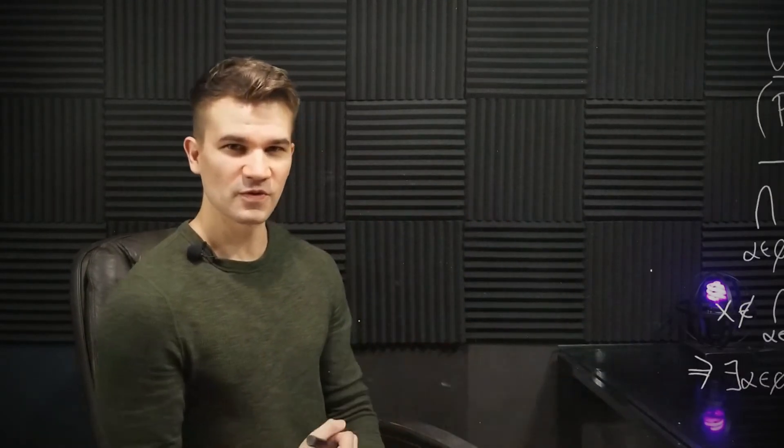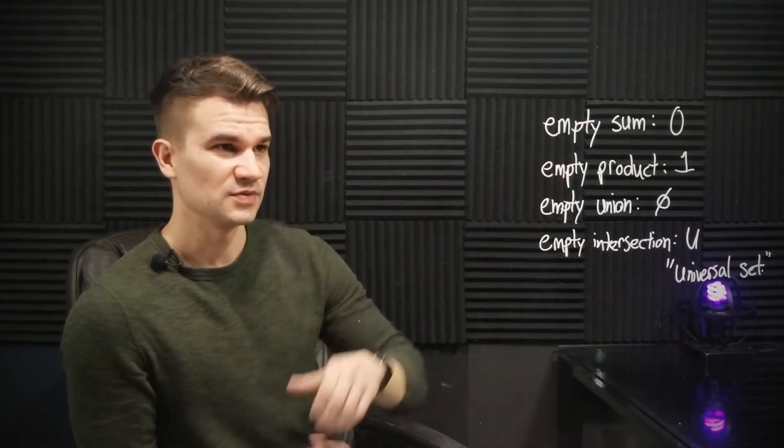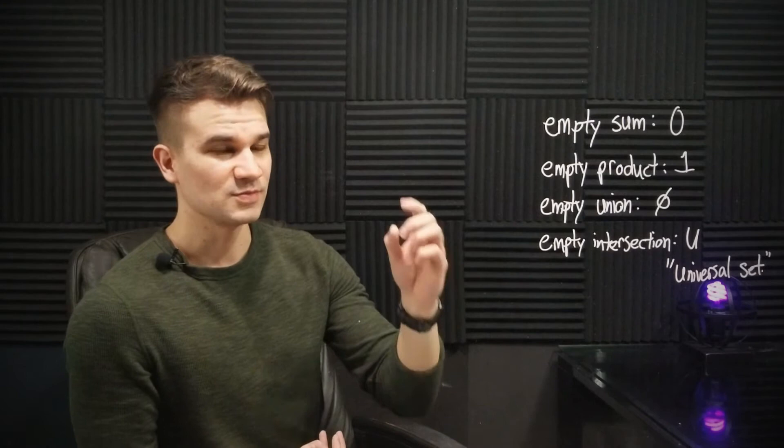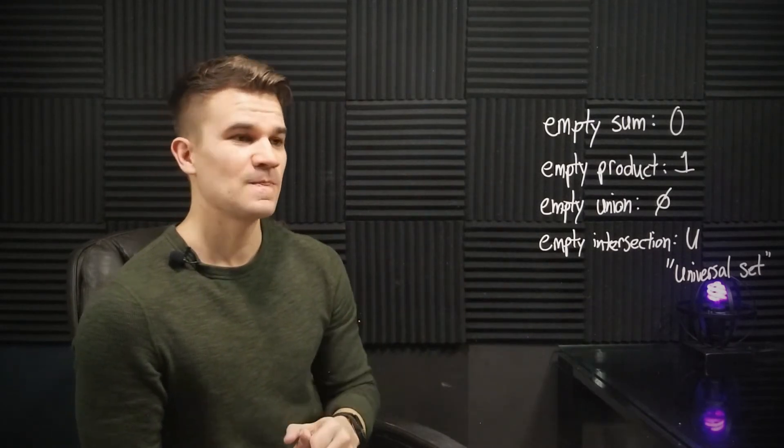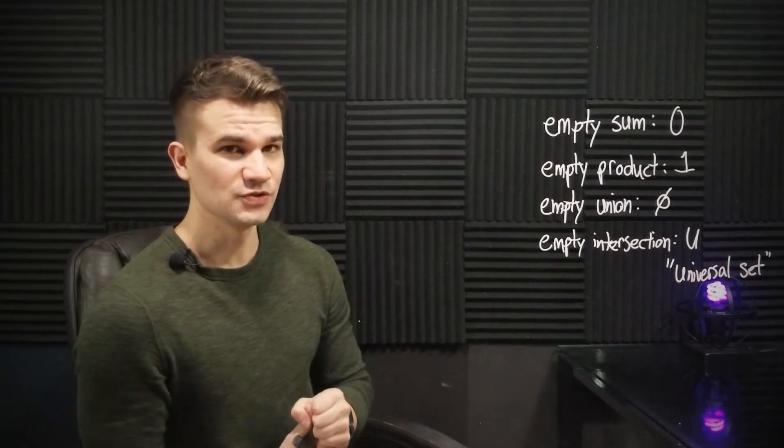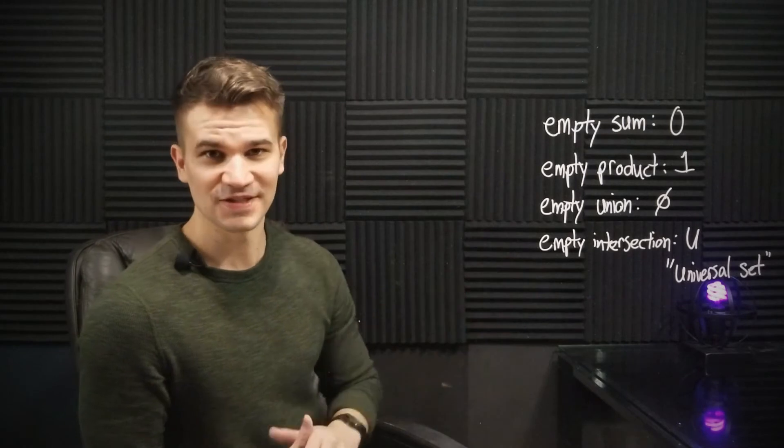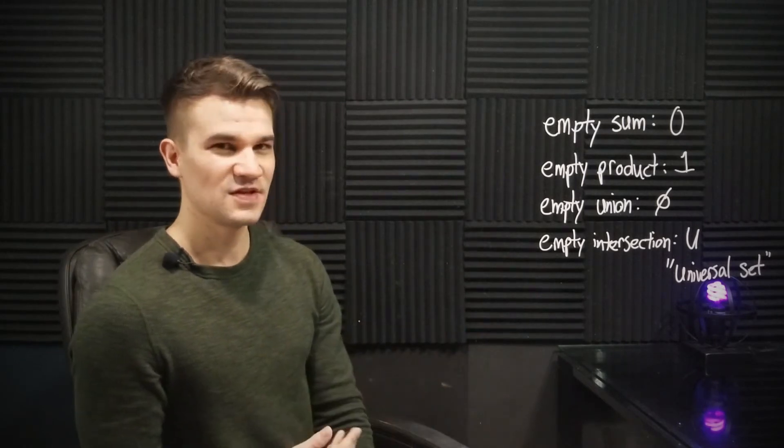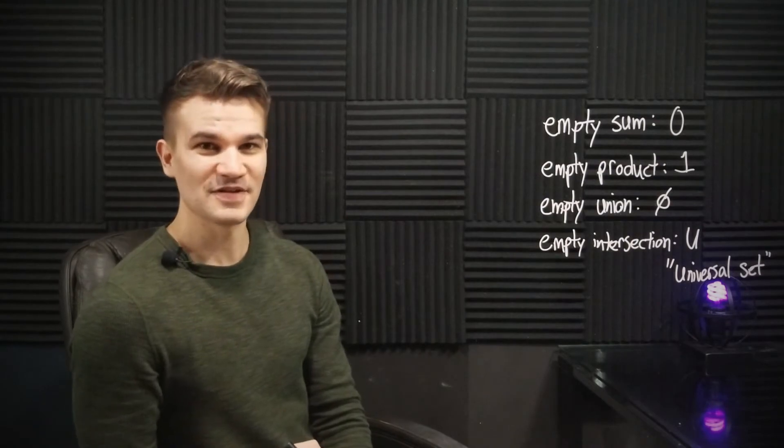So go ahead and think about the four examples that we looked at. We found the empty sum to be zero, we found the empty product to be one, we found the empty union to be the empty set, and we found the empty intersection to be U, the overall parent set that we're looking at in that particular instance. So what is the overall trend going on here? I'll let you think about that for a few moments.